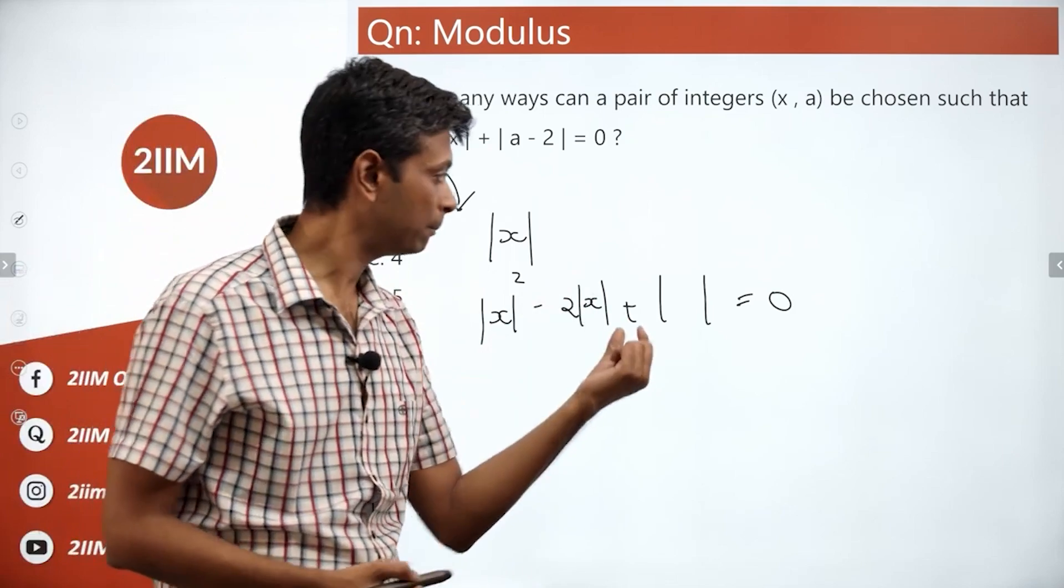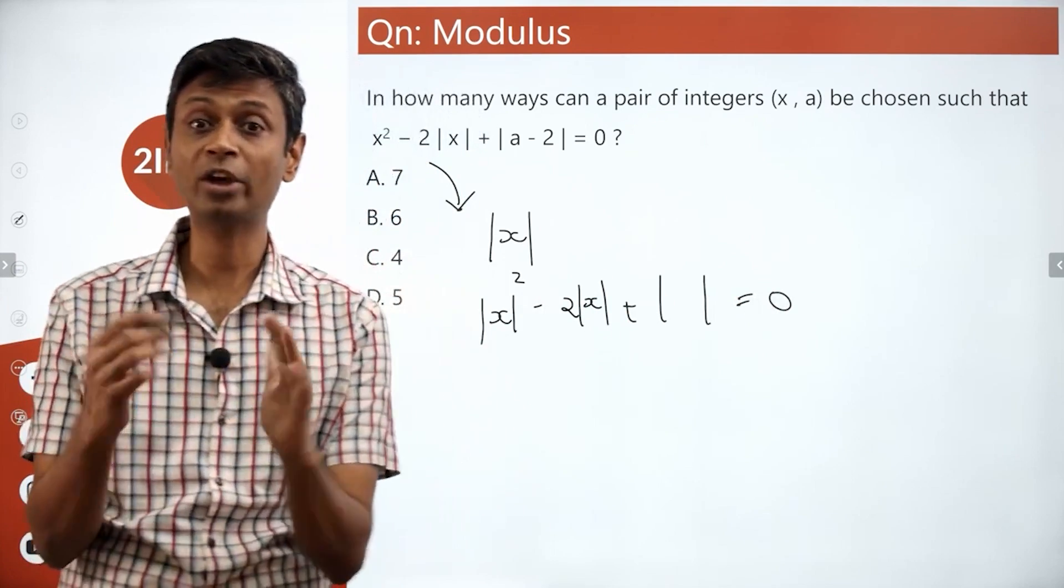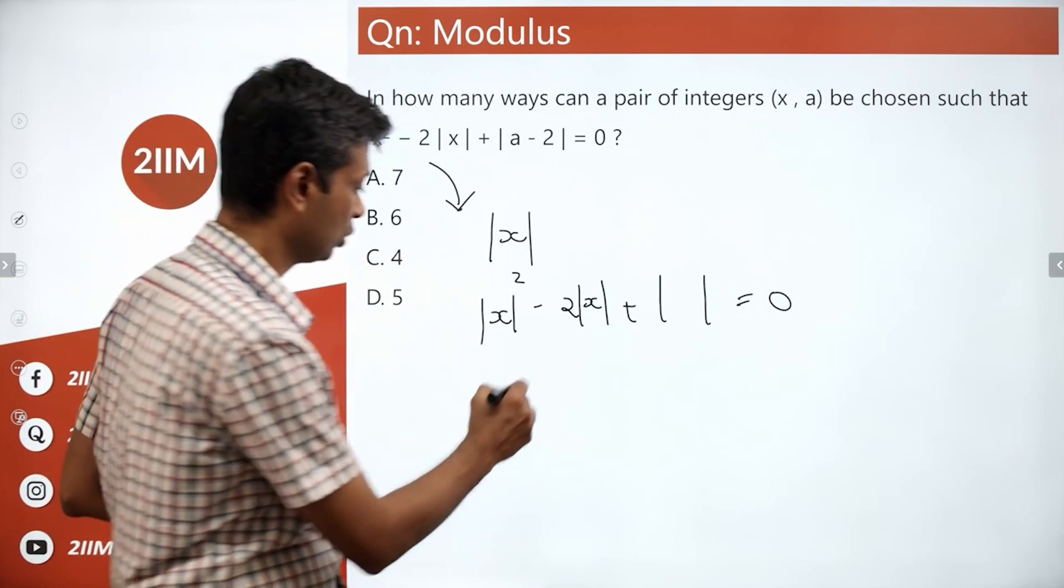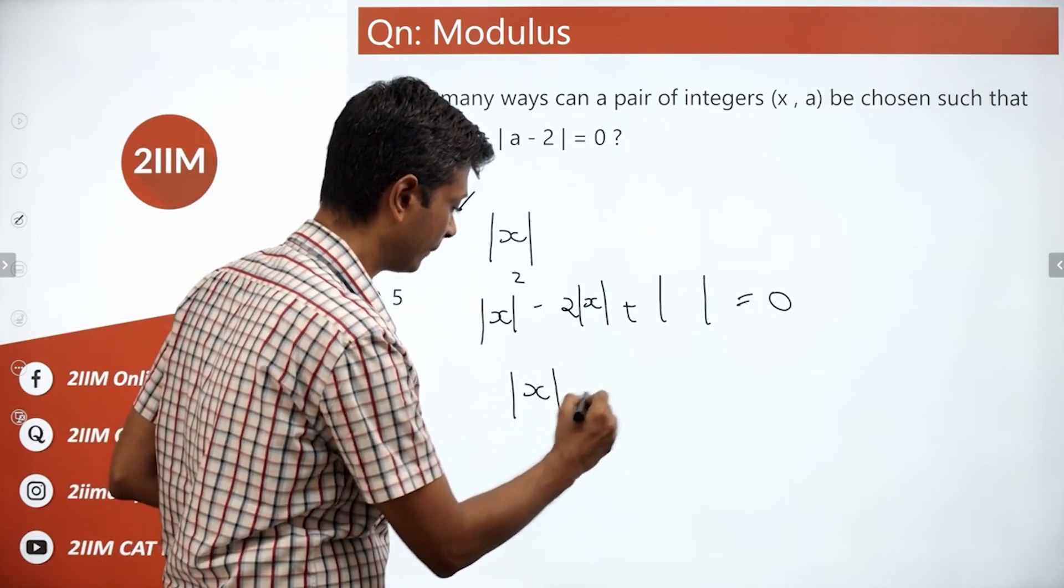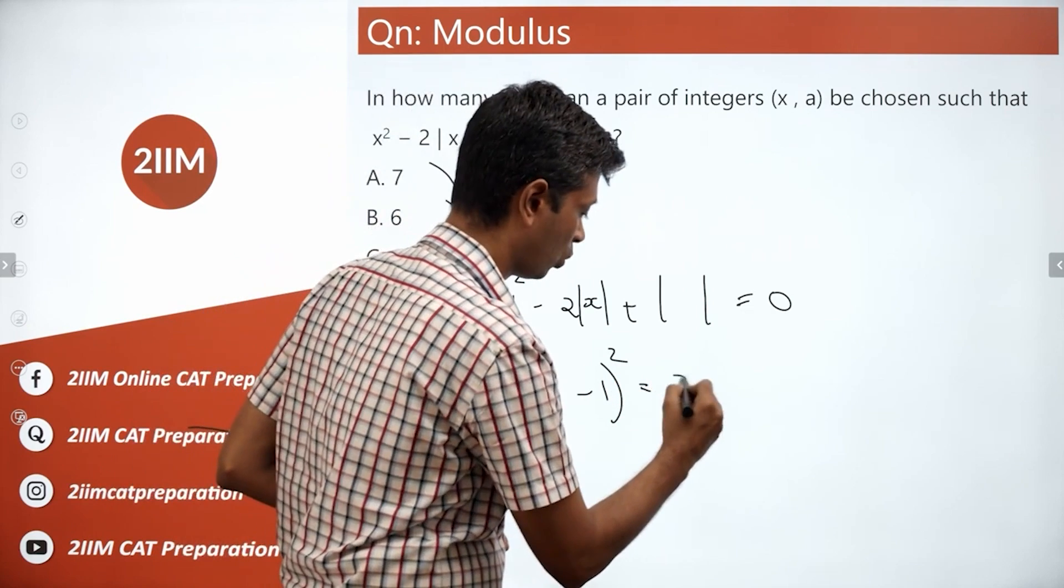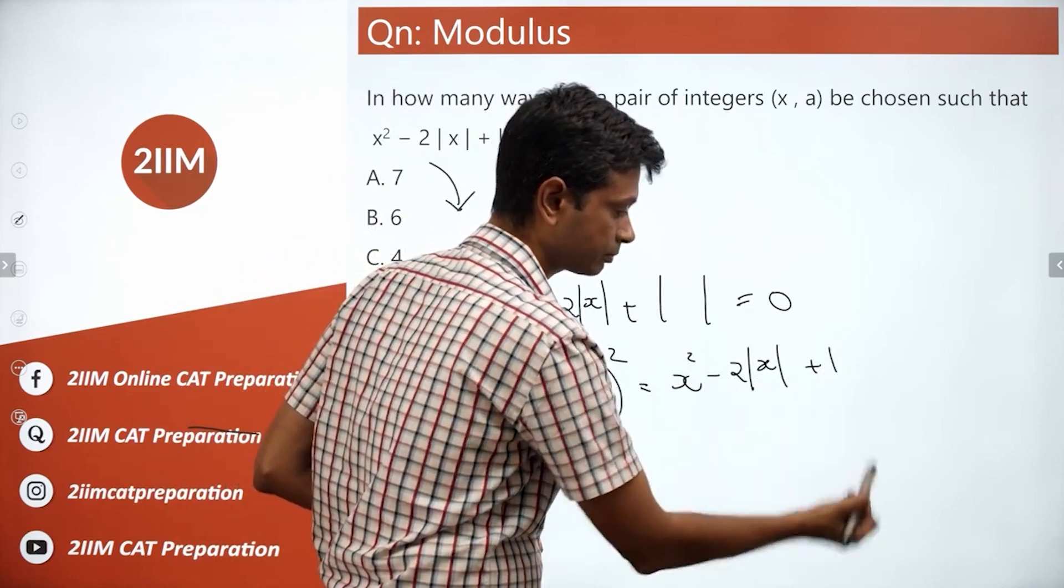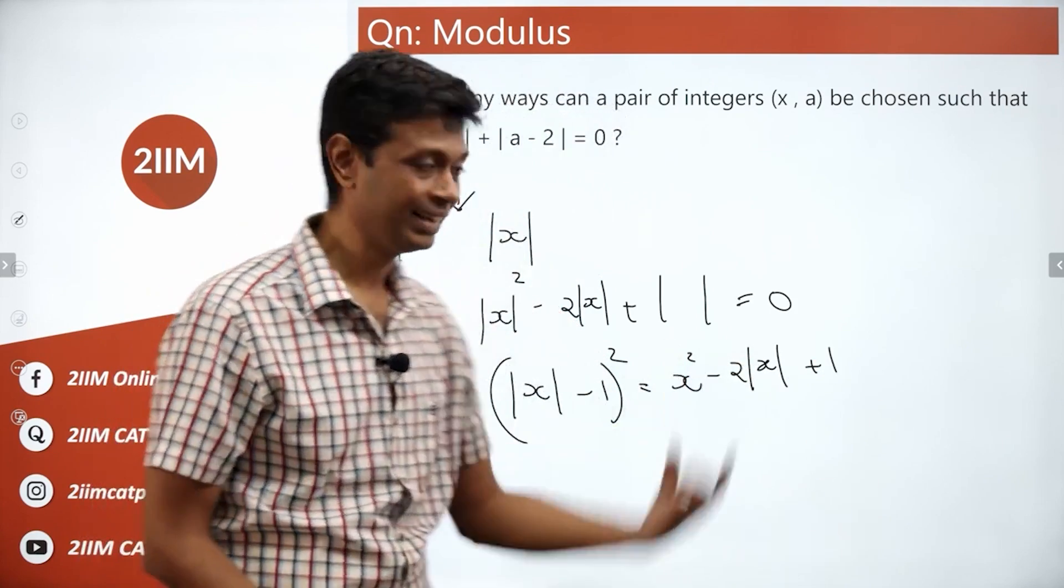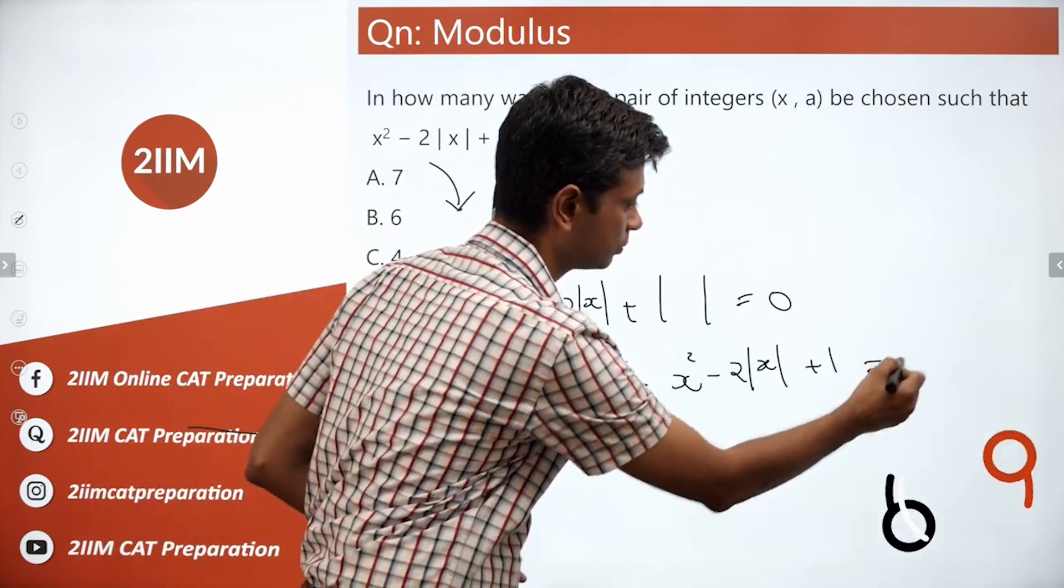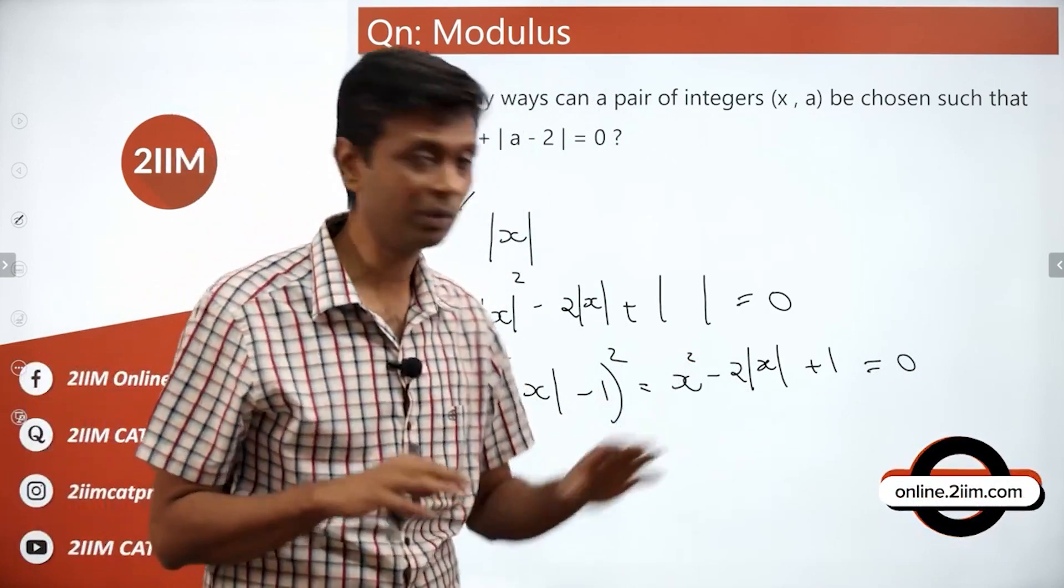The beauty here is x squared mod x squared minus 2 mod x plus 1 equal to 0 is a nice quadratic expression. This is mod x minus 1 whole square: x squared minus 2 mod x plus 1. This can be equal to 0 and mod x is equal to 1, but this number cannot be more than 1.